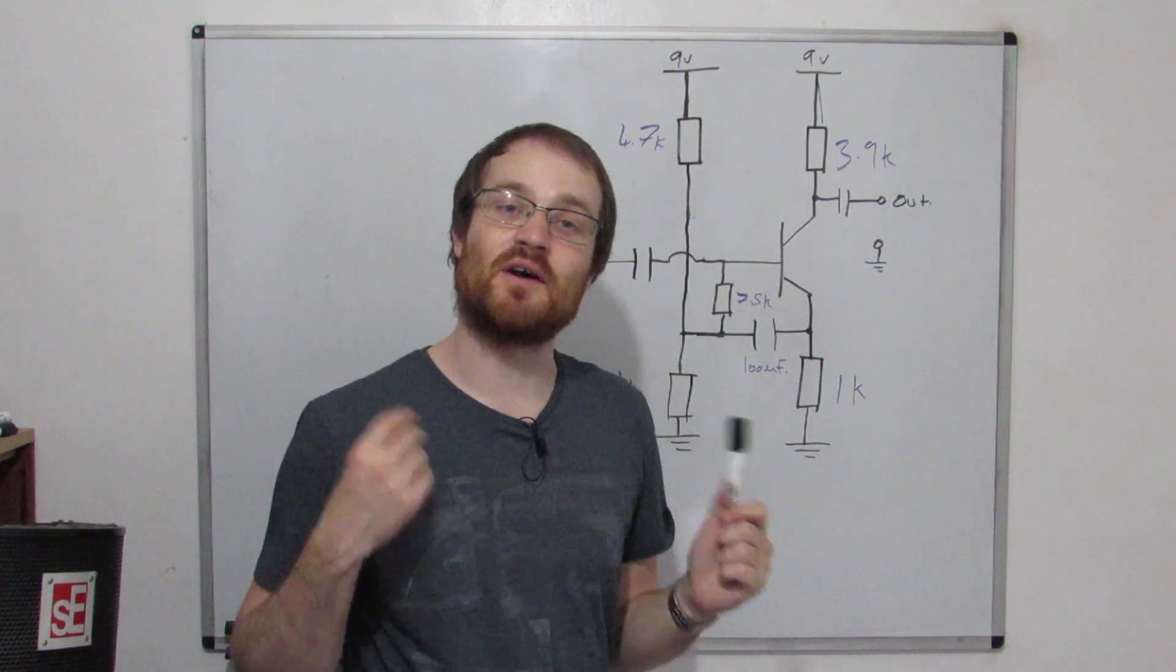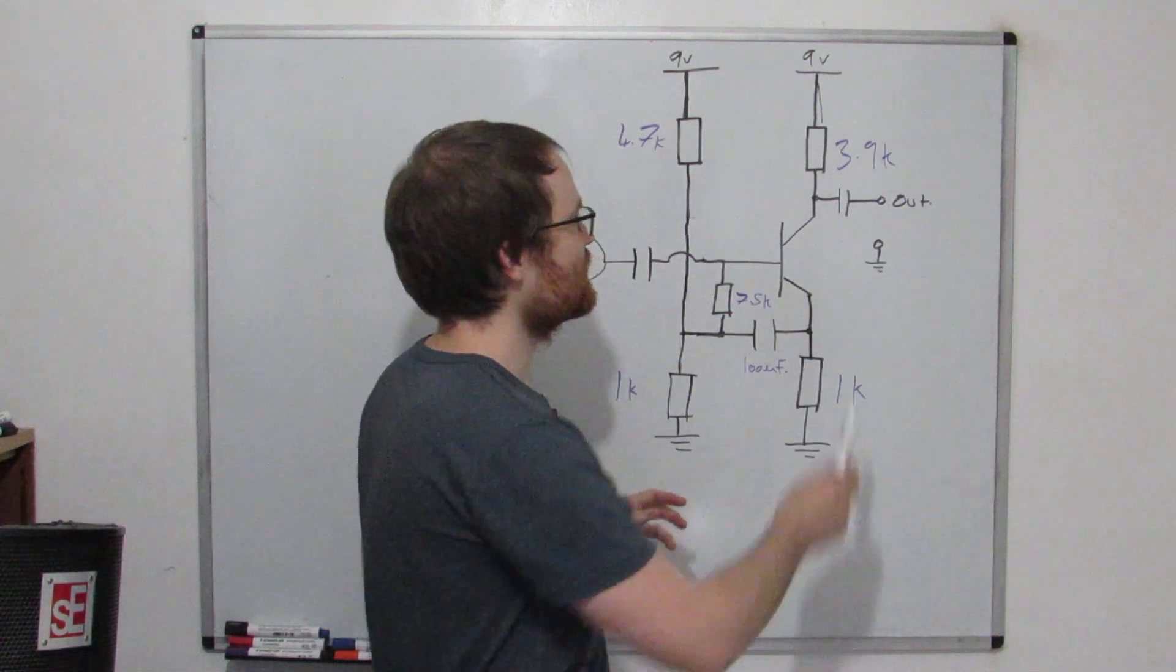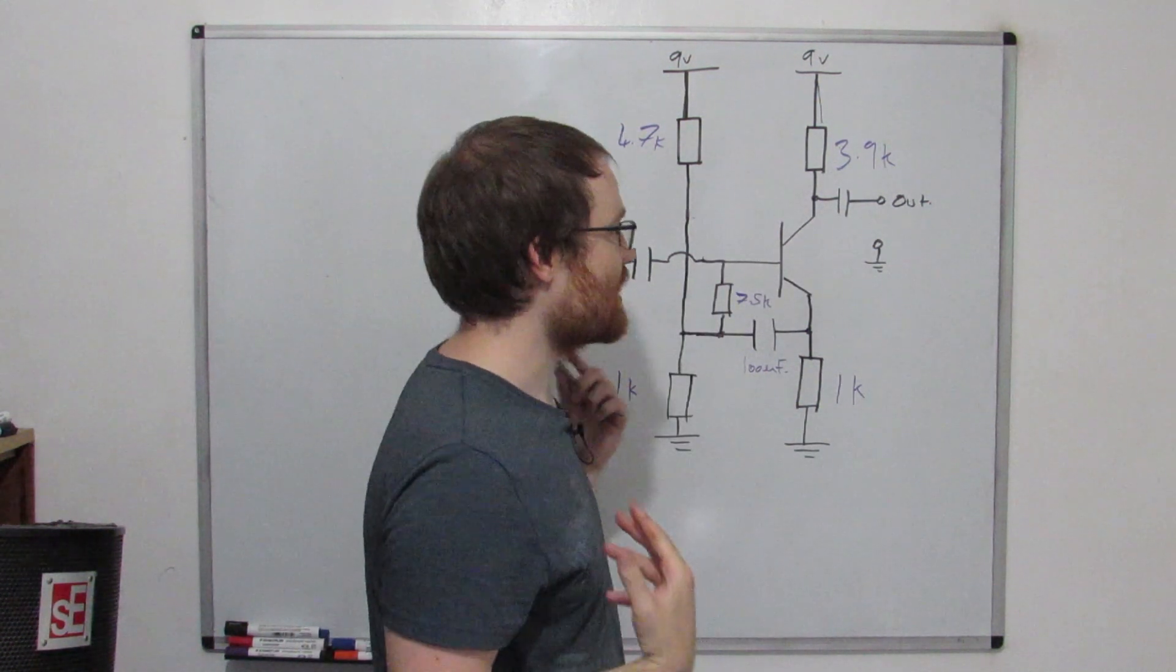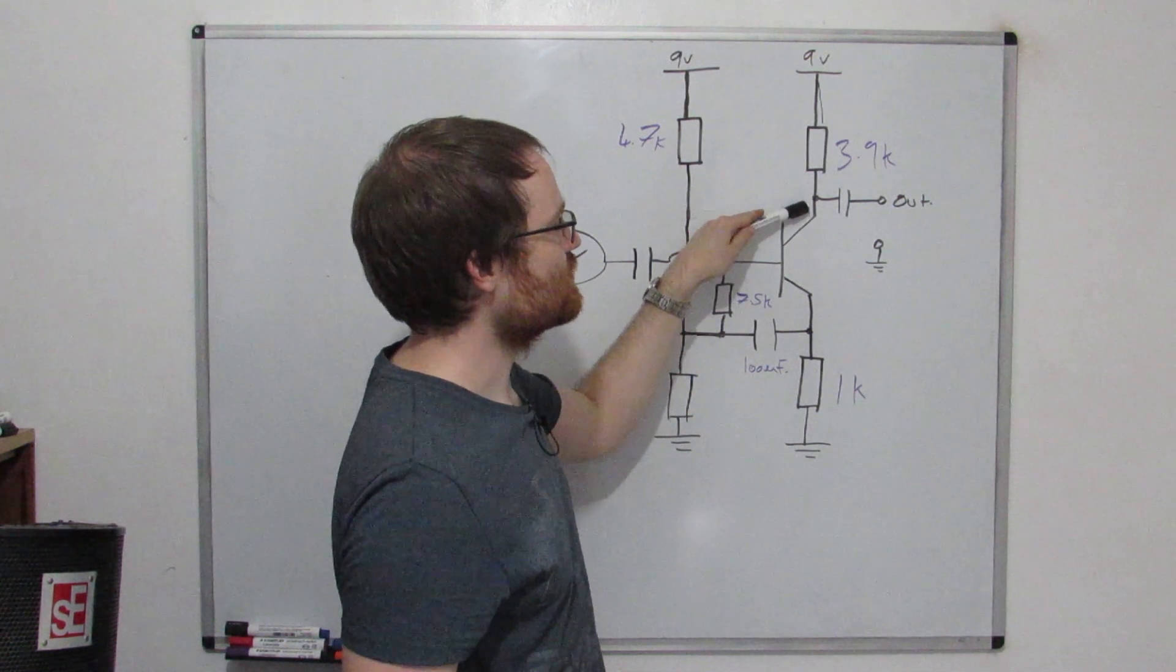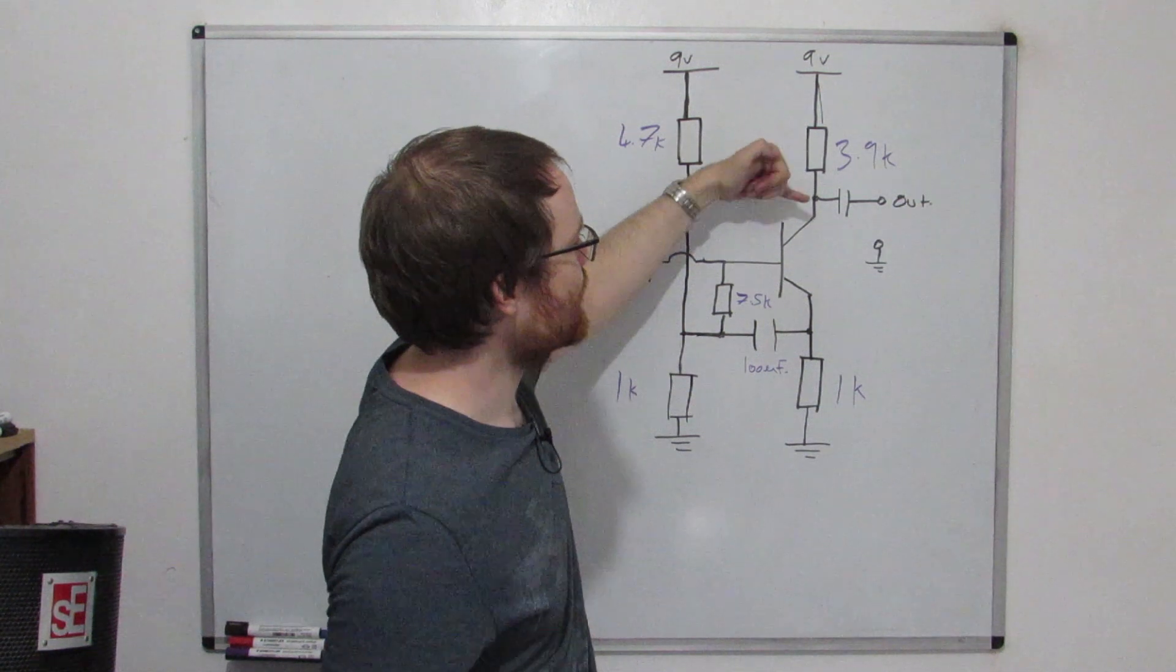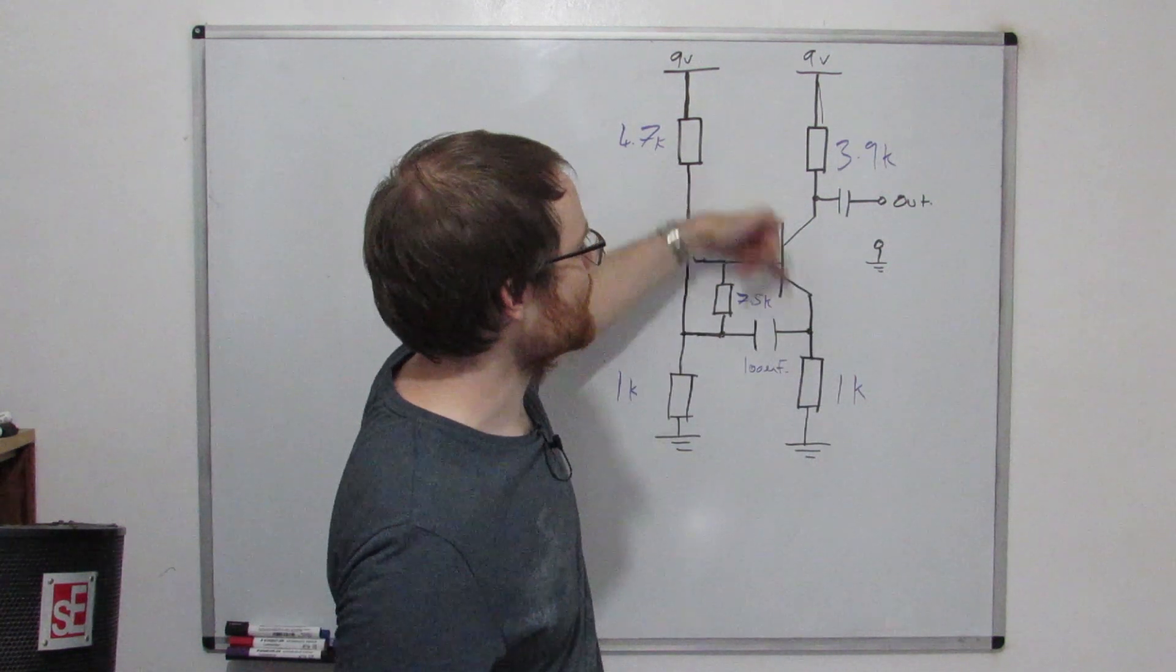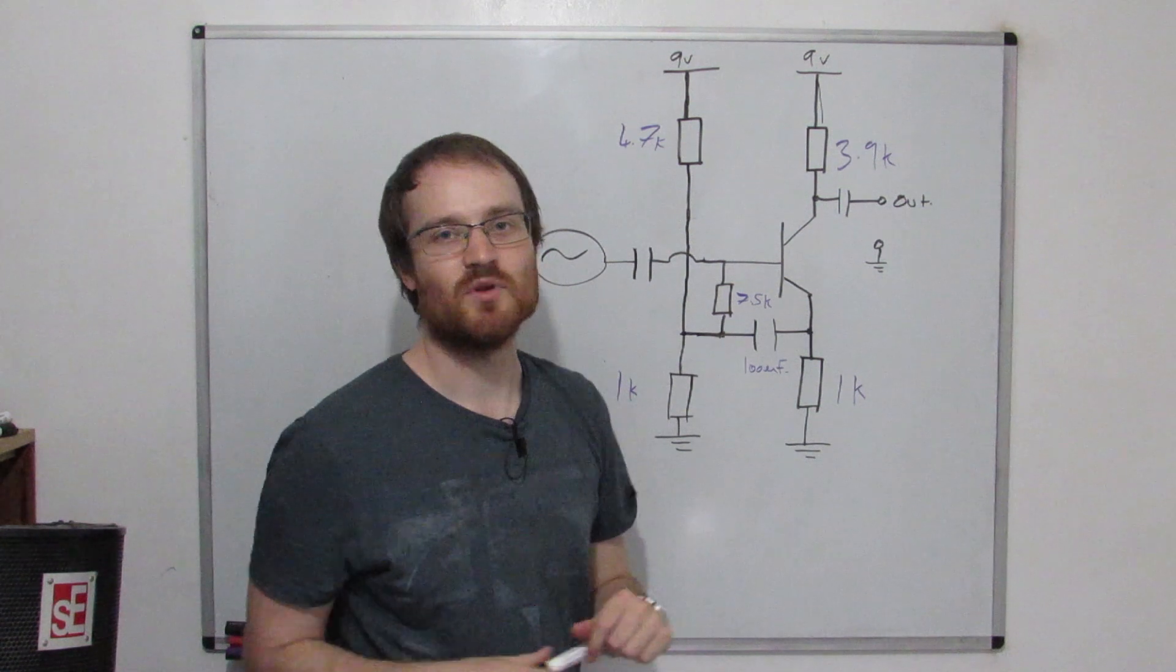This resistor sets the output impedance. So the output impedance at the moment is 3.9k which is nice and low. We don't want it much higher than that. On top of that, the current through this path is set by this resistor. That won't change if we change this resistor, and therefore that means that this point will shift down and that causes a problem because we want this point to be nice and centered between 9 volts and this point here which is at 1 volt at the moment. Shifting this down we'll get clipping.